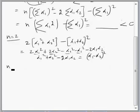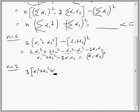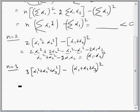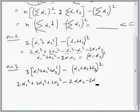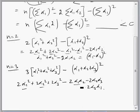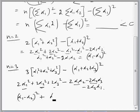Similarly, for n equals 3: the expression becomes 3 times (α₁² plus α₂² plus α₃²) minus (α₁ plus α₂ plus α₃) whole squared. After subtraction, we get 2α₁² plus 2α₂² plus 2α₃² minus 2α₁α₂ minus 2α₂α₃ minus 2α₃α₁. Taking one α₁ and one α₂ and combining with minus 2α₁α₂ gives (α₁ minus α₂)². Similarly, (α₂ minus α₃)² and (α₃ minus α₁)².